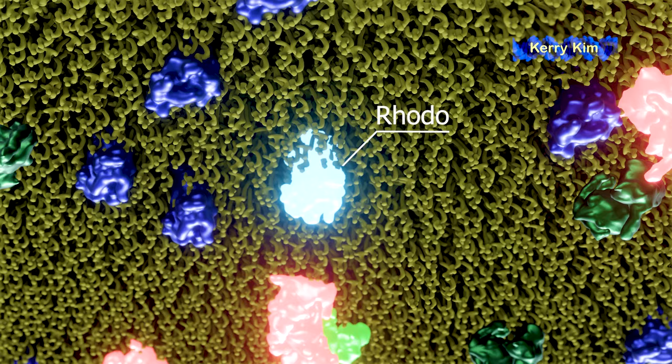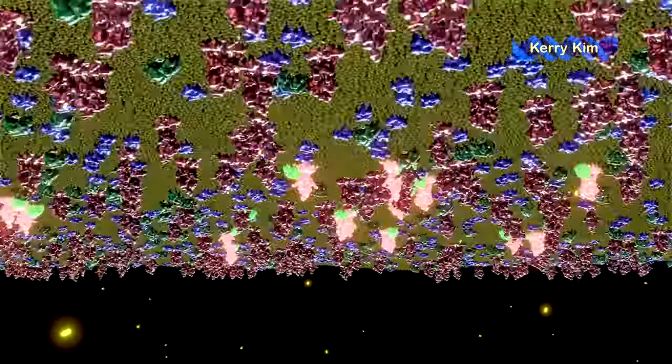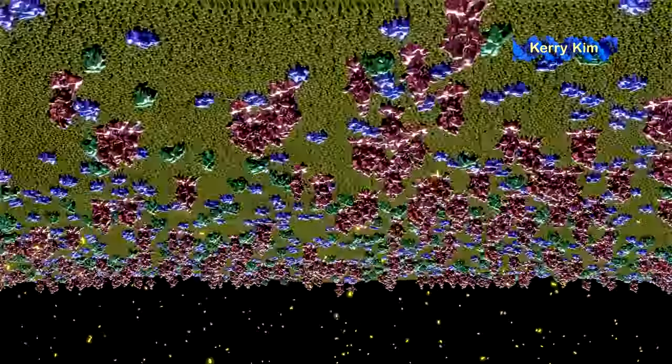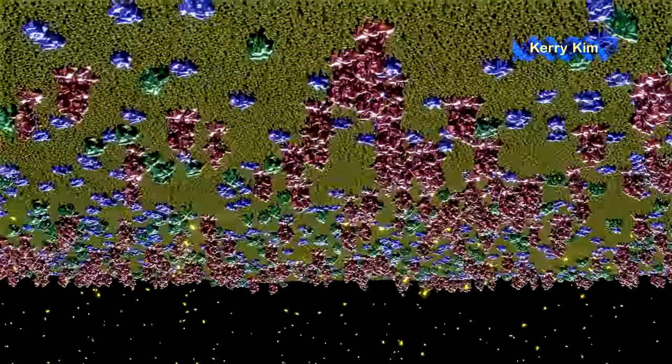After about a second, the rhodopsin becomes inactivated along with transducin and phosphodiesterase. Other proteins return cyclic GMP levels to normal and the channels reopen, returning the rod to a more positive membrane potential.